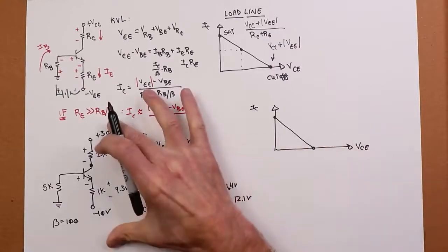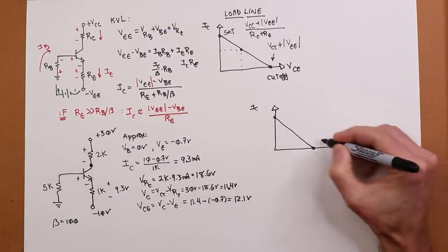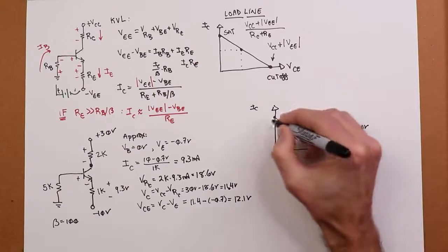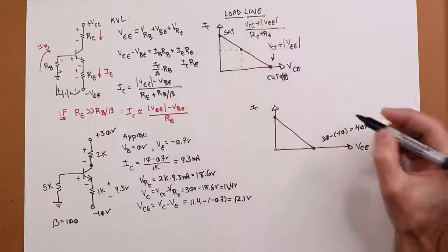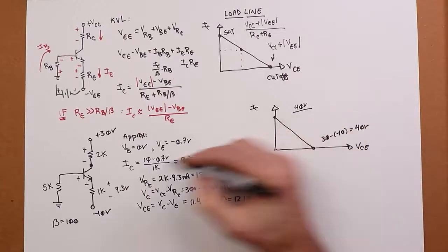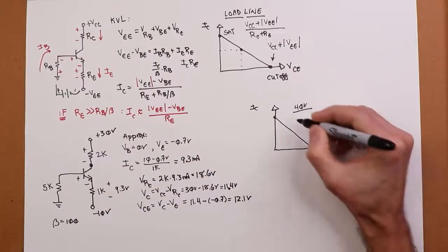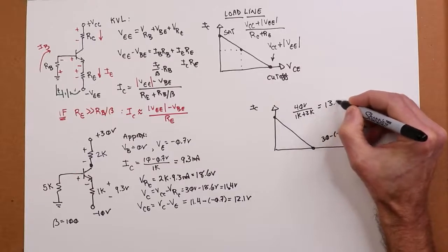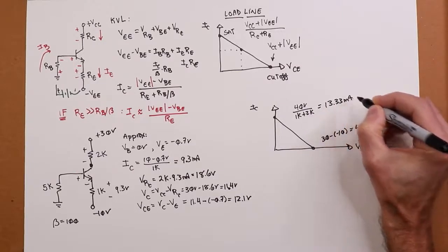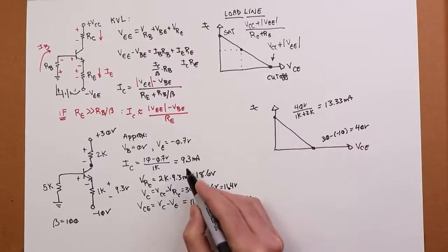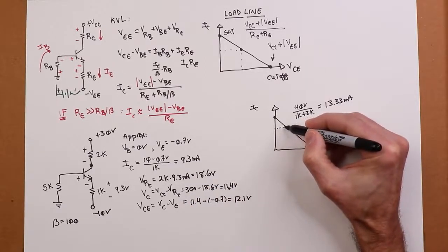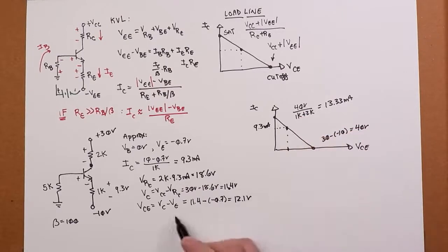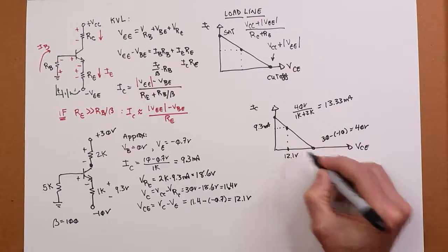Our cutoff is the total potential. So that's 30 minus a minus 10, which is 40 volts. And then our saturation is that same potential, 40 volts, divided by the total resistance that we have in the collector emitter. 1K plus 2K is 3K. So when I divide that out, we get 13 and a third. And where are we? Well, we're at 9.3 mils. So we're quite a ways up here. Here's our Q point. And our voltage is 12.1. So that's our approximation.